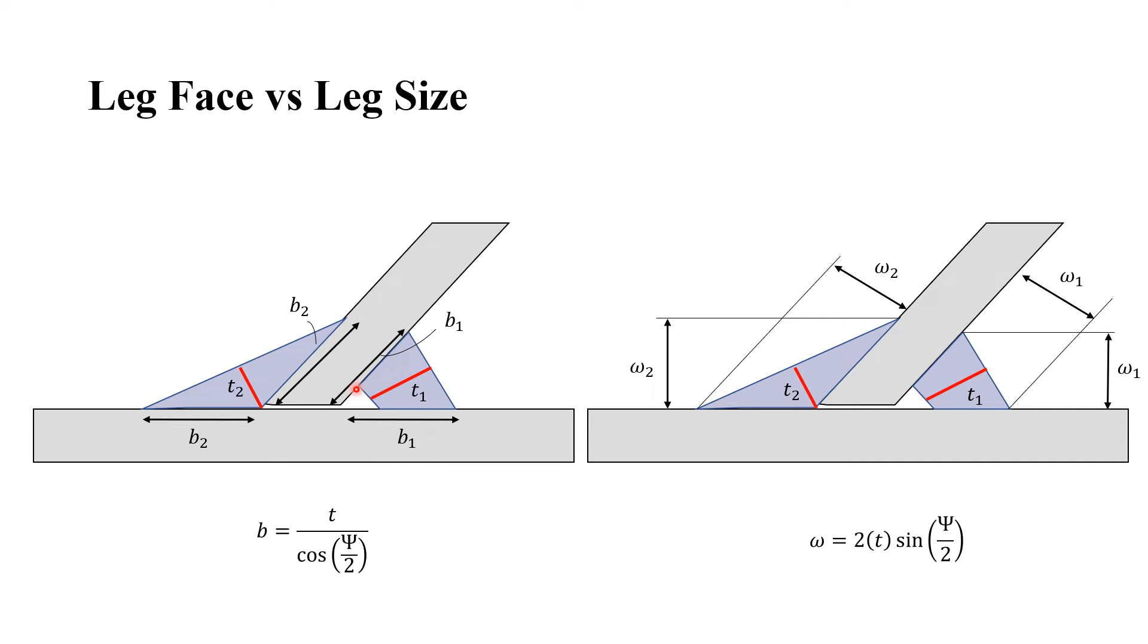However, when we have a skewed plate, it's very difficult to measure this dimension. And for practical reasons, we have to measure the leg size in this position and this position. You can see the value of B, the leg face, equals T divided by sin of half the dihedral angle.